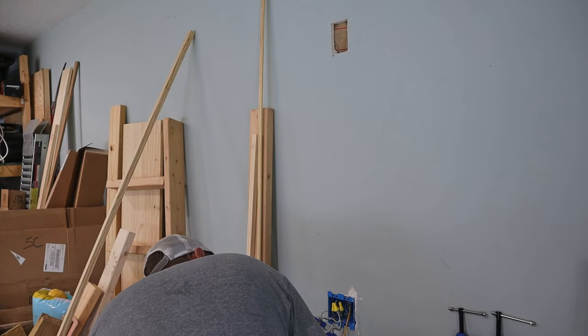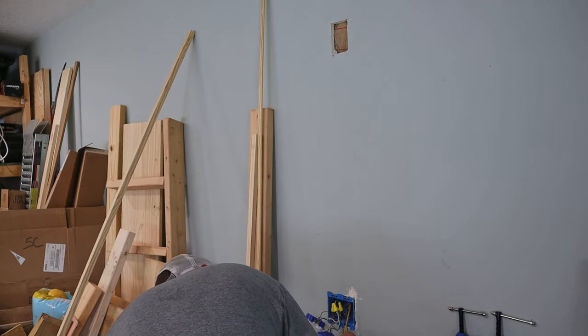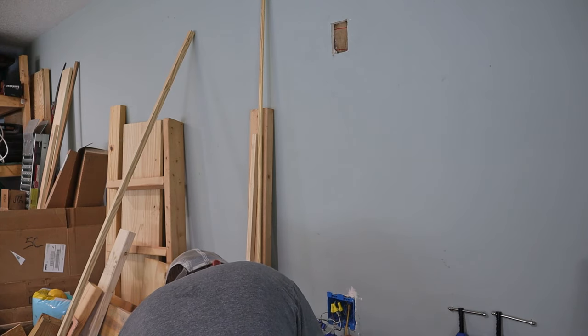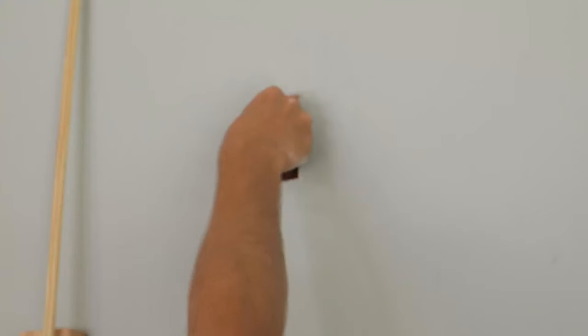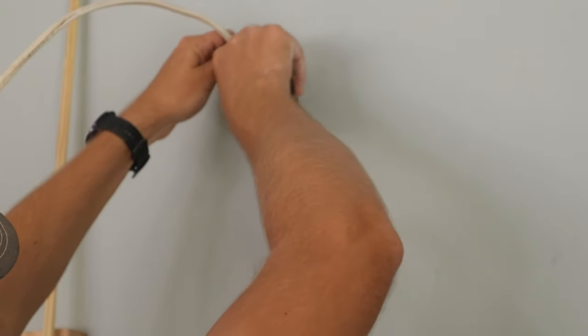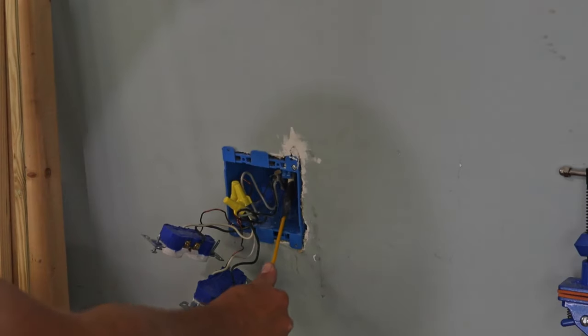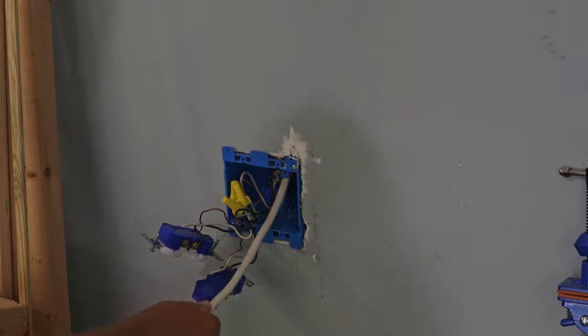Next I ran a fish stick up through the old outlet box underneath the sheetrock and up towards the new hole for the new outlet. Once the fish stick reached the hole, I reached in and pulled it out. Then I attached the wiring to the fish stick using electrical tape and pulled it down through the wall and down into the old electrical box.